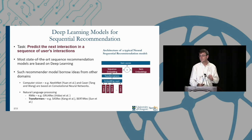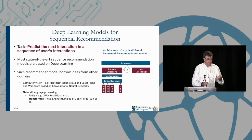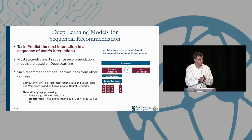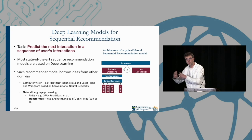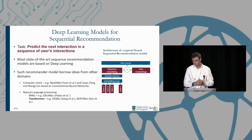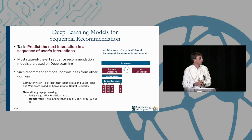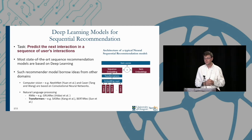This is a sequential recommendation session. We're in this task of trying to take a number of interactions that you've seen the user make with items and predict what the user's next interaction will be. As you've seen in the previous talks, many state-of-the-art sequence recommendation models are based on deep learning.